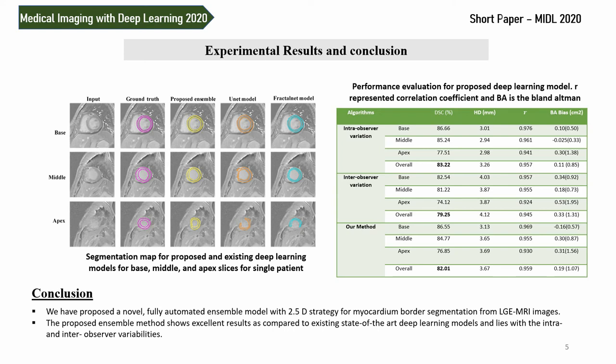We calculated the correlation coefficient between the surface area of the predicted segmentation map and the ground truth segmentation map. We also calculated the mean and standard deviation using the Bland-Altman plot. These statistical analyses validated that our proposed model produces better performance as compared to other state-of-the-art deep learning models.